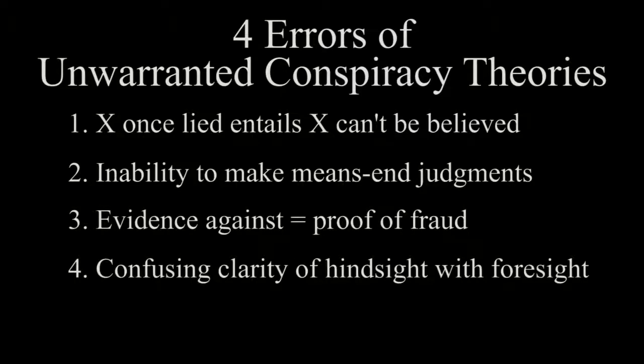Error number four: the classical logical fallacy of post hoc ergo propter hoc — after this, therefore because of this. The conspiracy theorist claims that because event B occurred after, or even as the result of event A, therefore event A was caused to bring about event B. For example, the First World War happened after the death of Archduke Franz Ferdinand, and there is clearly a sense in which it happened because of his death. Though these effects of the assassination may seem obvious now, that is no indication that such a progression was obvious to the people involved at the time. There is no evidence that the people who assassinated the Archduke had any clue that it would bring about a world war. Hindsight is overwhelmingly clearer than foresight.